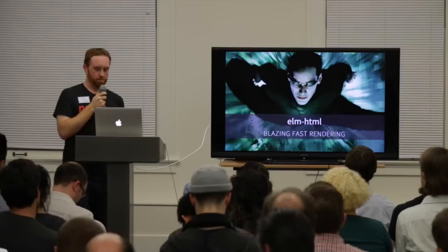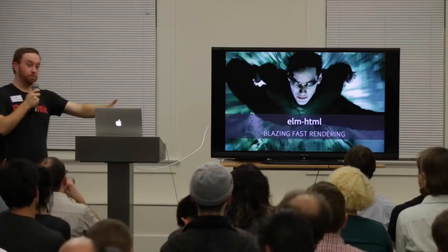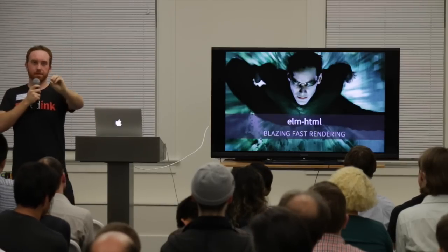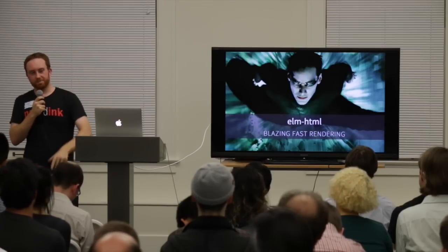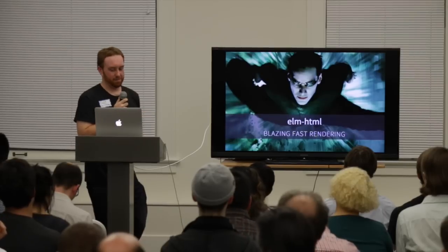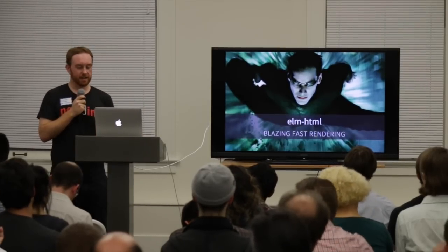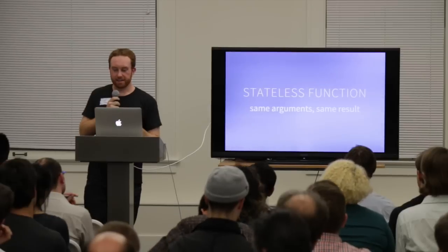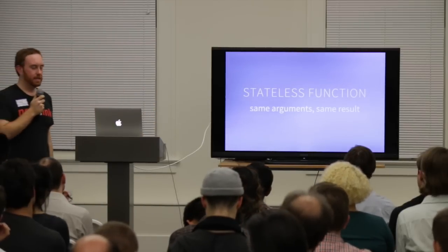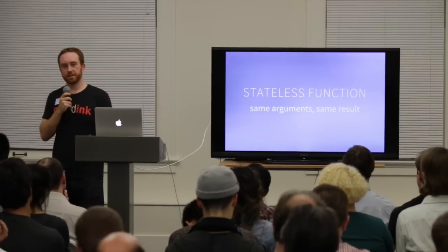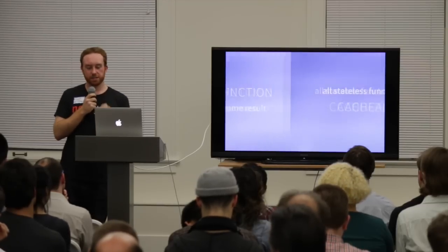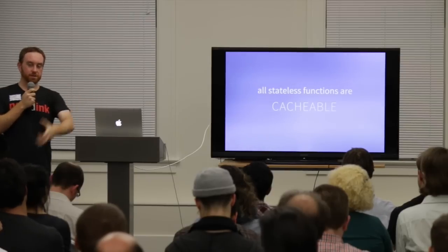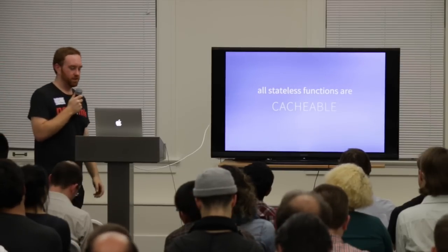Something important to note about this function: it has no side effects and doesn't look at any state other than the model you give it. All it does is take the model and return virtual DOM elements, which Elm HTML renders with blazing fast performance. Elm HTML uses immutability for quick referential equality checks, fast DOM diffing, and batched updates with requestAnimationFrame — everything to get maximum performance. And you get all of that just out of this one pure, stateless function.